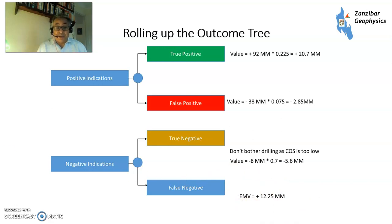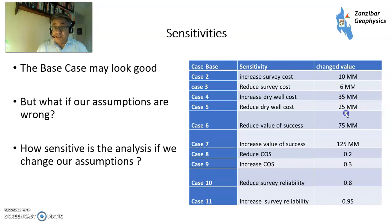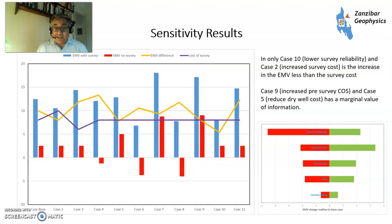That sounds really good, but how sensitive is it to the various inputs? Running sensitivities: if you add $2 million to the survey cost (from $8M to $10M) or reduce it to $6M; if you increase the dry well cost to $35M or reduce it to $25M; if you reduce or increase the value of success; if you reduce or increase the original chance of success; and if you reduce or increase the survey reliability — those are cases 2 through 11. I've charted them here, with the base case shown, reds for no-survey and sky blues for with-survey.